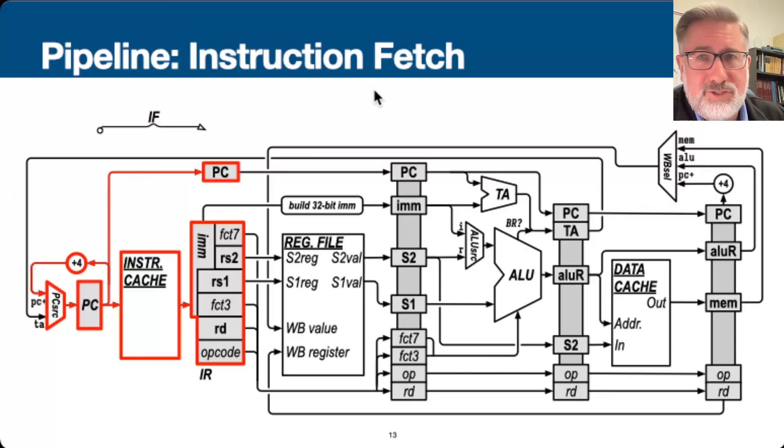So in the fetch phase, instruction fetch, we have the program counter at the beginning and the instruction register at the end. And the operation is load the instruction from the instruction cache and update the program counter for the next instruction. So PC gets PC plus four, and we're going to keep doing that because we don't know if we're going to have a new program counter address from a branch or a jump because we haven't even decoded what this instruction is yet.